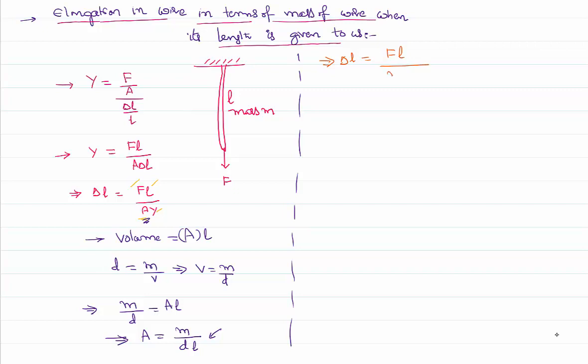And of course Young's modulus as it is given here. So I can rearrange the terms: δL equal to FL squared density Y by M. It is given that force is constant, density of the wire is constant, Young's modulus is constant.